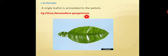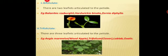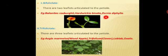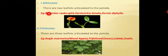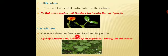Next is bifoliate — 'bi' refers to two, 'folia' refers to leaflet. Two leaflets arise from the petiole. The diagram shown is Zornia diphylla, a variety similar to Ziziphus. Other examples include Balanites roxburghii and Hardwickia binata. These are examples of bifoliate leaves.